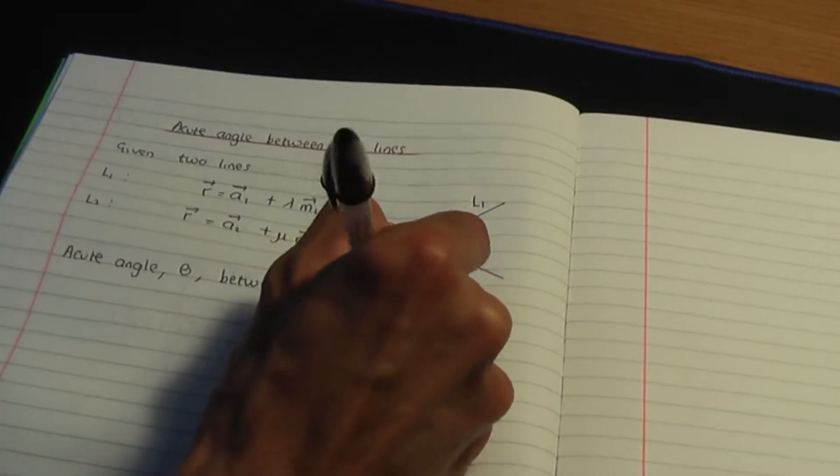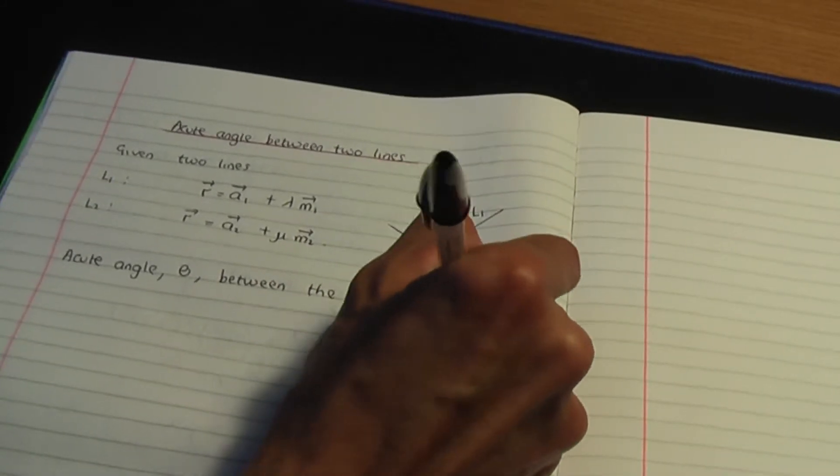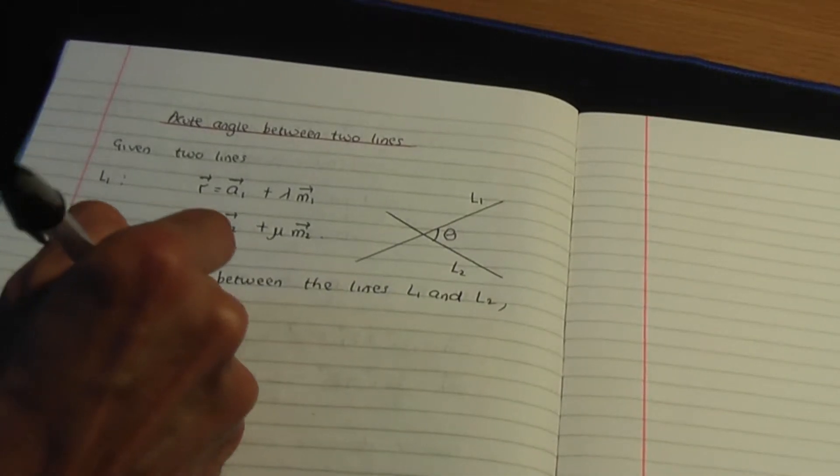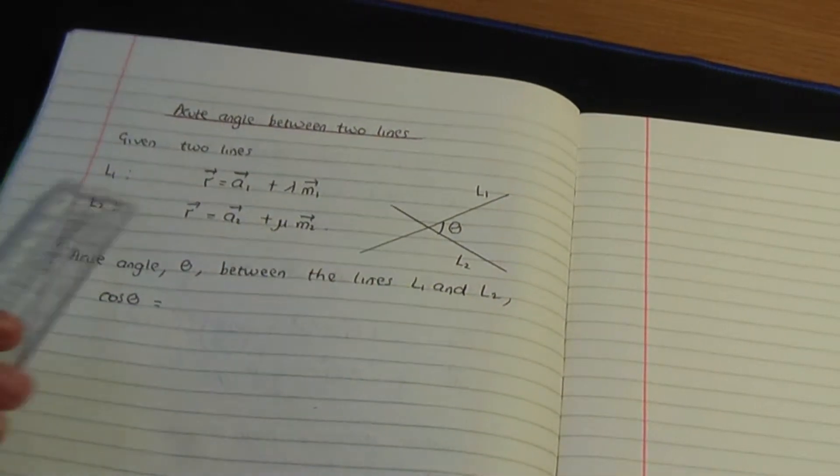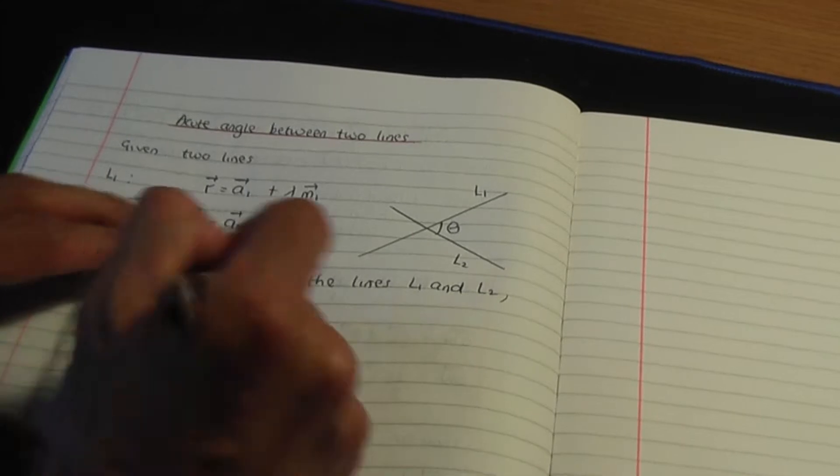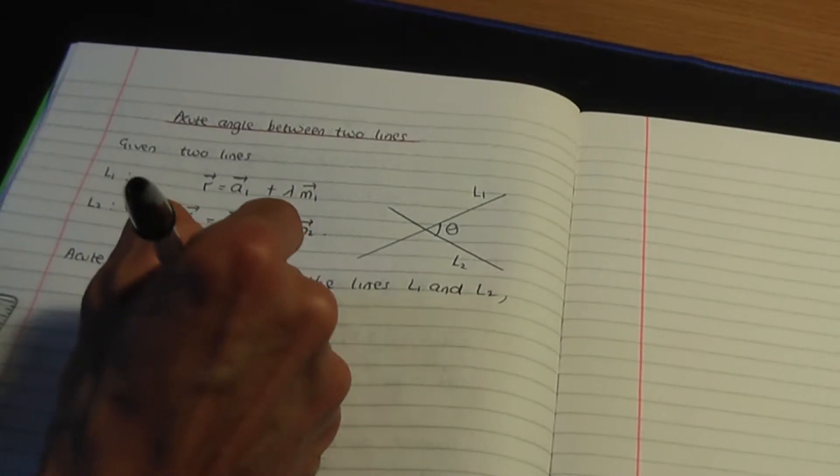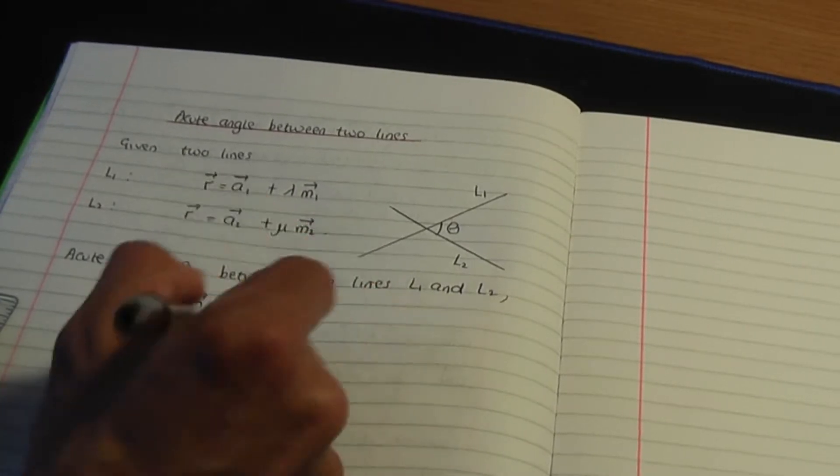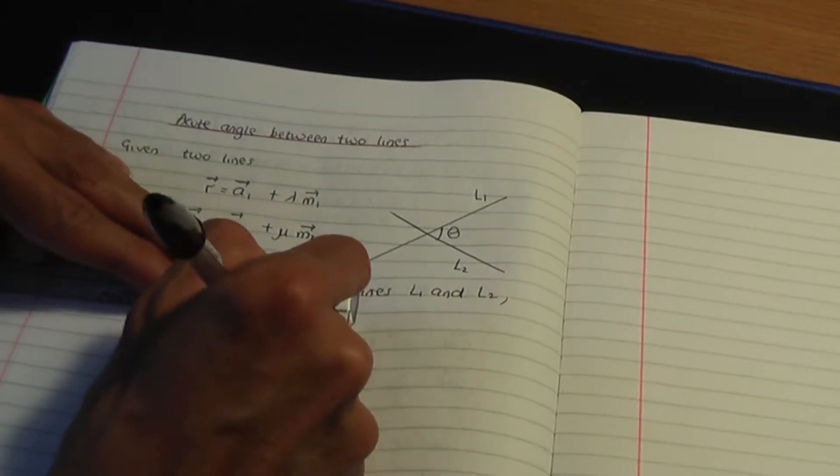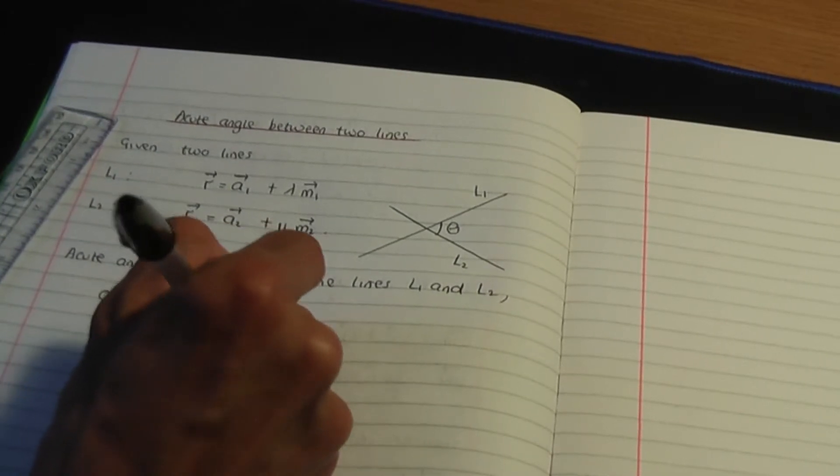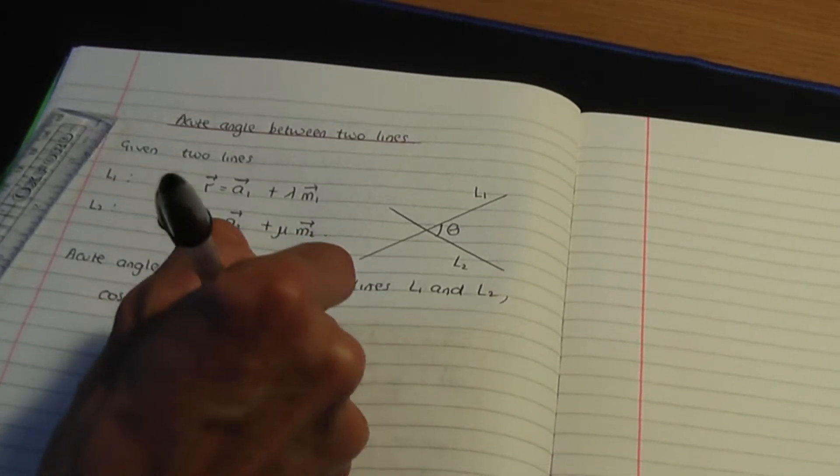So in order to work out the acute angle theta between the lines L1 and L2, the formula is cos theta and that is equal to the absolute of M1 dot M2 divided by the modulus of M1 times the modulus of M2.